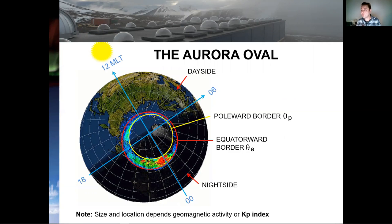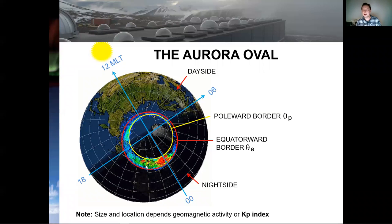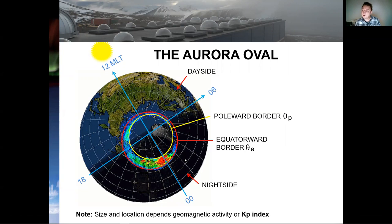Let's have a closer look at the aurora oval. Here you have a correct view of Earth, where the center of the image is the magnetic pole and we have a fixed coordinate system where 12 magnetic local time is always pointing towards the sun — so we have the day side and the night side. The data you see here is from an American NOAA satellite and it clearly defines the poleward border and the equatorward border of the aurora oval. Also notice that Earth is rotating beneath this oval with the center around the geographical pole. The Russians had ice drift stations during the Cold War that measured these borders using all-sky camera data, and later the Americans did the same with satellites.